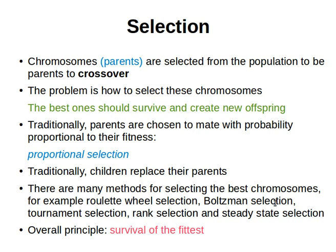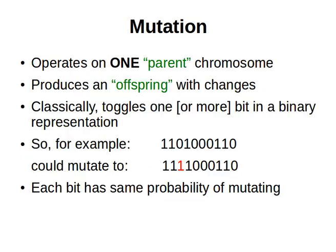There are actually many methods for selecting the best chromosomes. For example, we have roulette wheel selection, Boltzmann selection, tournament selection, rank selection, and steady state selection, among others. The whole principle is survival of the fittest — we want the best candidate solutions or the best chromosomes to be selected.